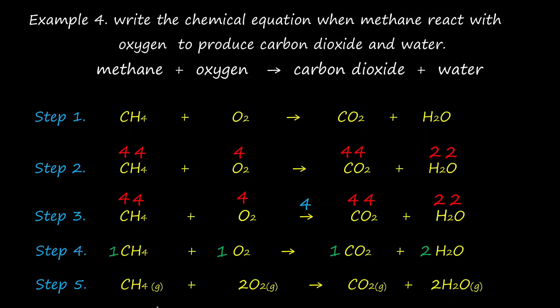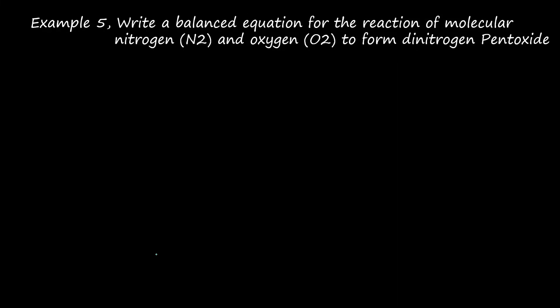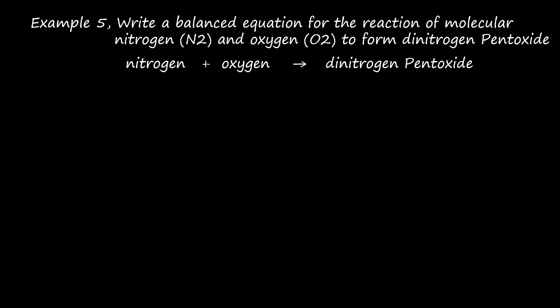Lastly, specify the state of matter: methane is gas, oxygen is also gas, carbon dioxide is also gas, and water is liquid. Example 5: Write the balanced equation for the reaction of nitrogen and oxygen to form dinitrogen pentoxide. The reactants nitrogen and oxygen react to form dinitrogen pentoxide. The first step is to translate this word equation into a skeleton equation.